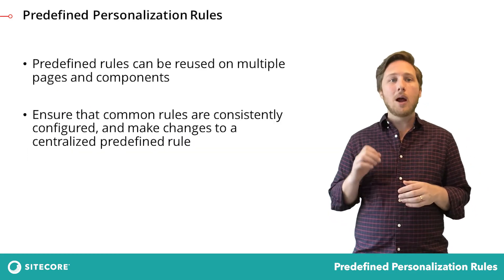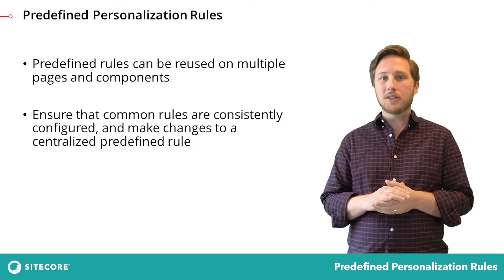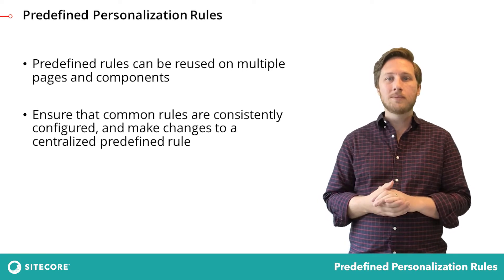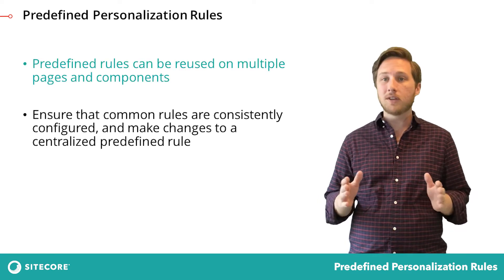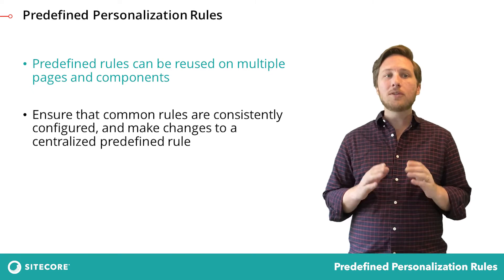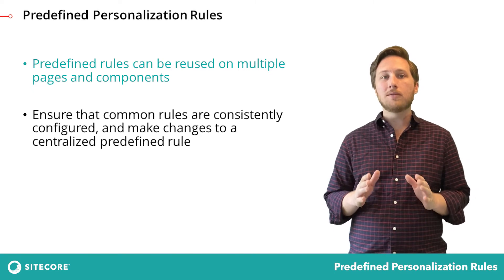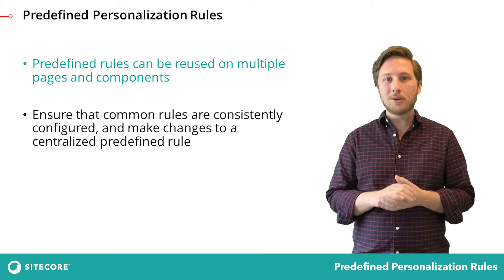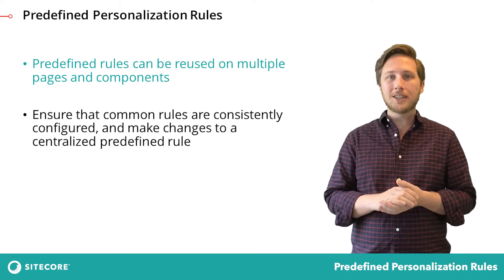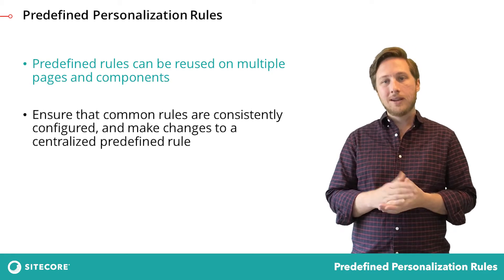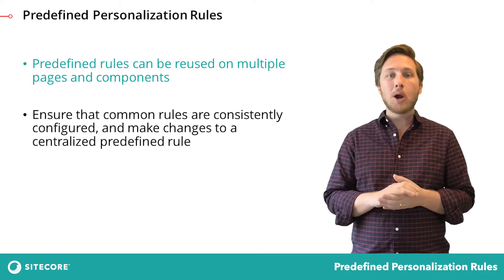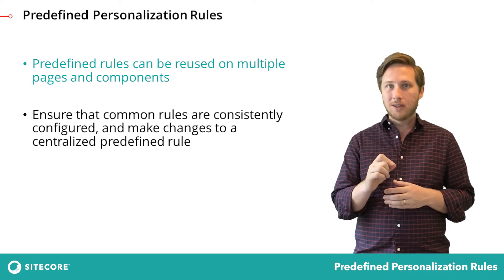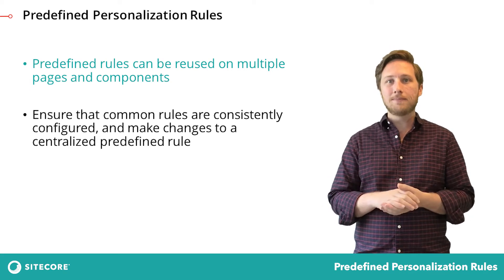Now, imagine that you want to create this personalization scenario on multiple pages across the site. A predefined rule is perfect for this scenario because instead of creating the rule again from scratch, you can simply reuse it. And once a personalization condition is added to a component and it's working as intended, marketers can deploy this same condition to other areas on the site.